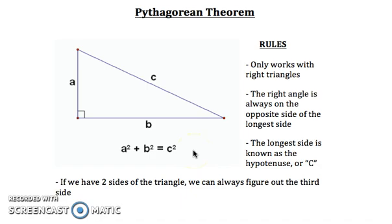And using the Pythagorean Theorem, if we have two sides of a triangle, we will always be able to find the length of the third side. Now, a and b can be reversible. This can be b and this can be a. It really doesn't matter as long as you keep c as the longest side.